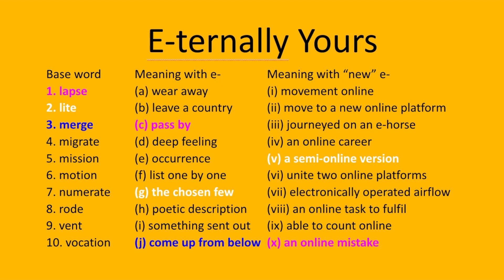To emerge is to come up from below. But 'merge' is normally to join two things. So, e-merge: unite two online platforms, or something like that. To emigrate is to leave a country, but to e-migrate — if you move electronically — you'd move to a new online platform.